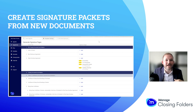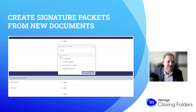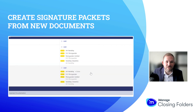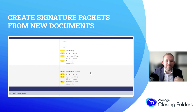That's not a problem. You can actually generate their signature page within Closing Folders very easily. You would simply click Add, select who you wanted, and then we're going to generate those pages. I'm doing it for one item — our non-disclosure agreement — but do know that you could do it for every single item within your checklist all at once.